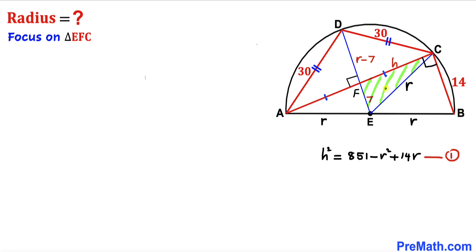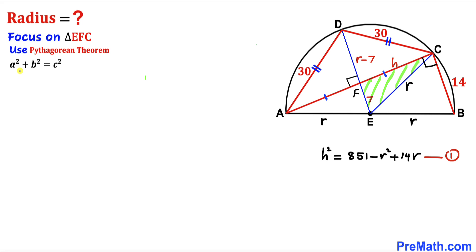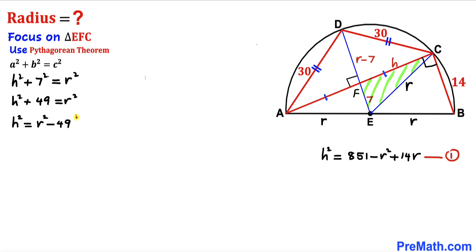Now let's focus on right triangle EFC, whose sides are 7, h, and radius r. Applying the Pythagorean theorem: h² plus 7² equals r², so h² plus 49 equals r². Moving 49 to the right side gives us Equation 2: h² equals r² minus 49.